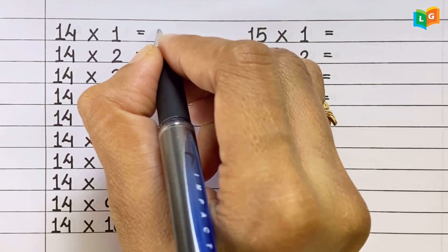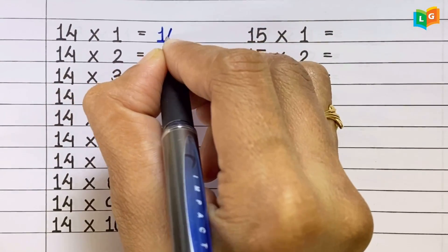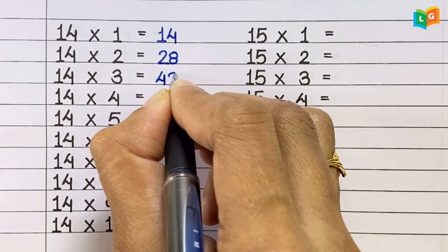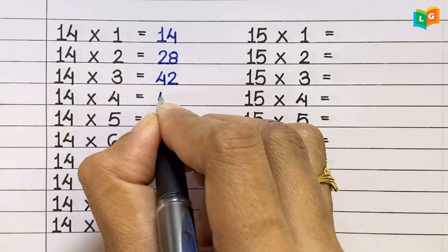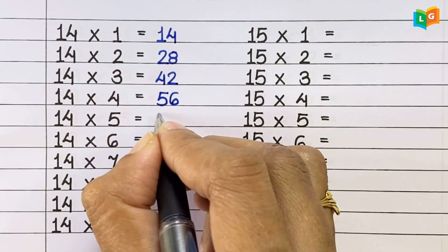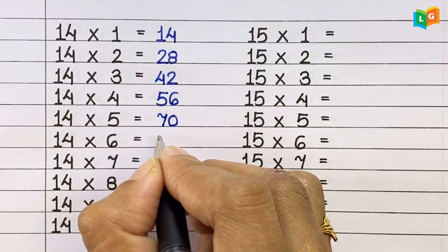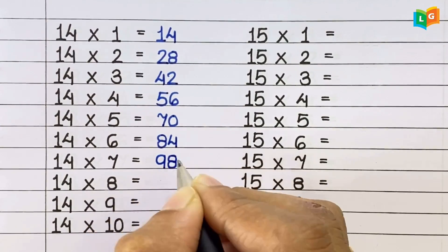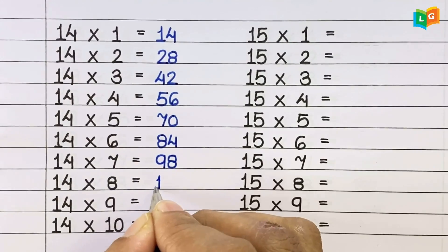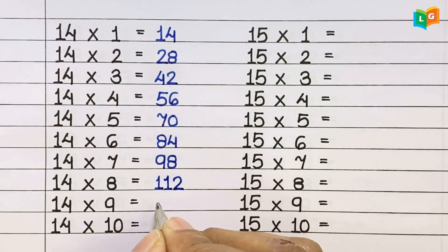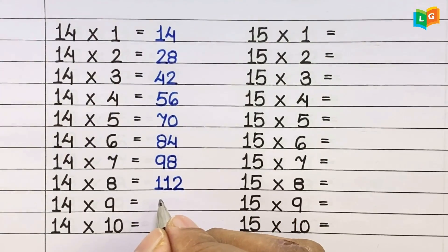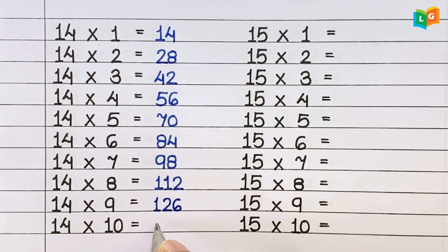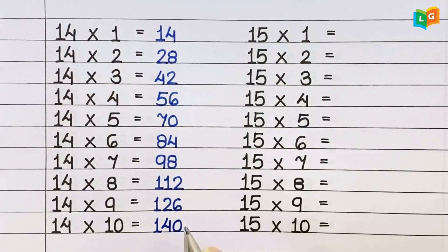Now let's see table of 14. 14 1s are 14, 14 2s are 28, 14 3s are 42, 14 4s are 56, 14 5s are 70, 14 6s are 84, 14 7s are 98, 14 8s are 112, 14 9s are 126, 14 10s are 140.